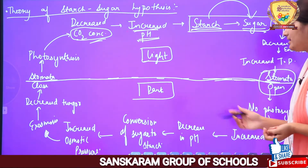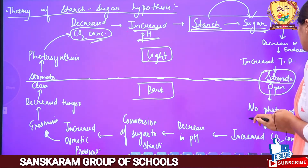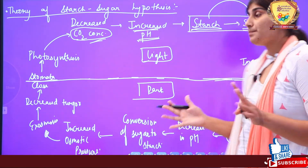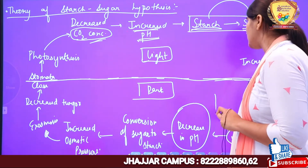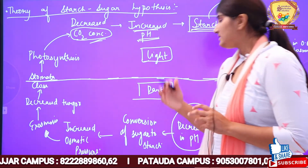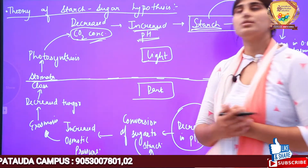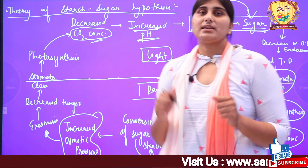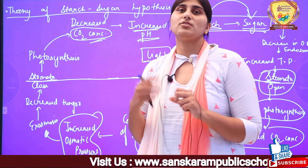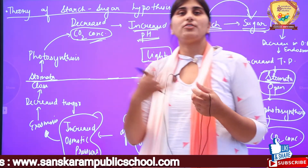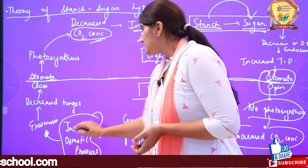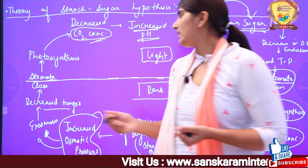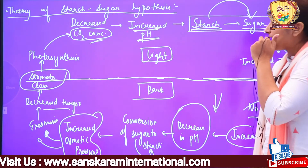अगर रात की बात करें — dark conditions में photosynthesis नहीं होगी। No photosynthesis होने से CO2 की concentration बढ़ जाएगी क्योंकि CO2 को use करने वाला कोई नहीं है। CO2 concentration बढ़ने से pH decrease हो जाएगा। इस decrease in pH की वजह से sugars will be converted back into starch। Starch water में soluble नहीं है, इसलिए osmotic pressure घट जाएगा, water free हो जाएगा और cell से बाहर निकलना शुरू हो जाएगा। पानी बाहर निकलते ही cell का turgor pressure घट जाएगा and the stomata will close। यह थी Starch-Sugar Hypothesis, जो Lloyd ने propose की थी।